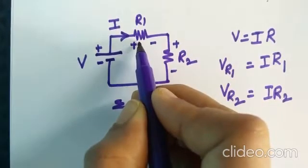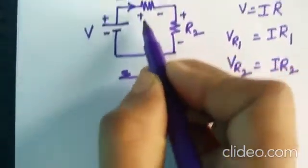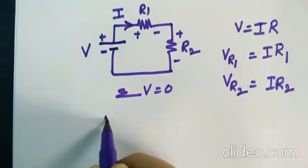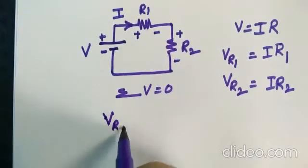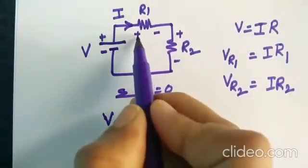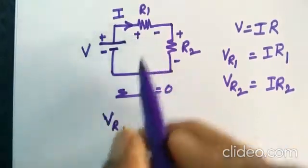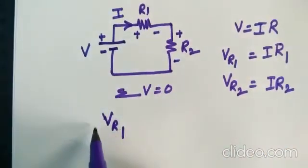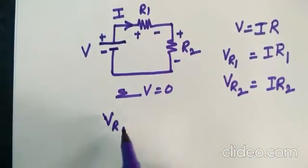So next to the source, what is the element you are having? R1. So voltage across R1, that is VR1. So since this is starting from positive polarity, so start with VR1. So plus VR1 or VR1 is the same.